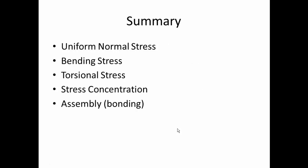In summary: uniform normal stress, bending stress, torsional stress (using both the albatross and split-line methods), stress concentration, and assembly bonding for welded joints — all demonstrate good correlation between classical mechanics/materials theory and SolidWorks FEA. This validates the theoretical models and demonstrates the power of combining analytical and computational tools.